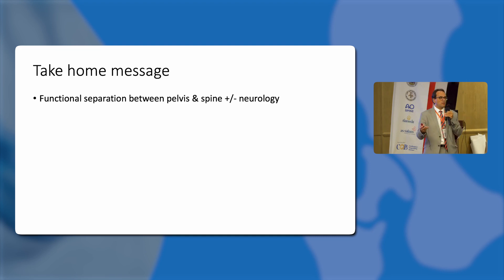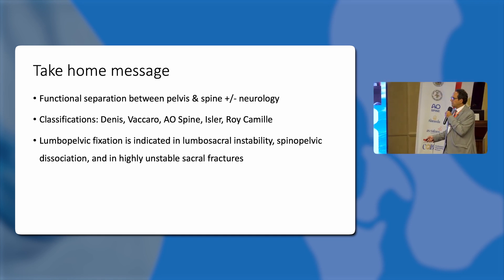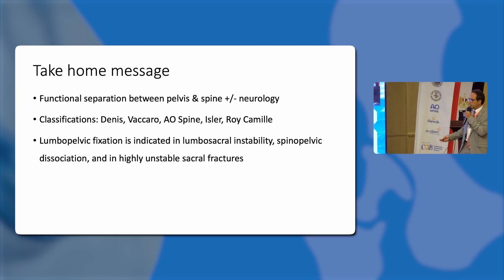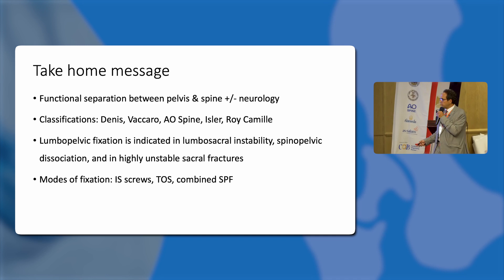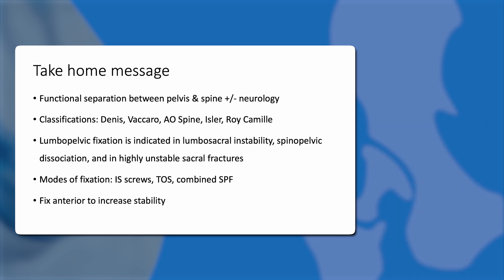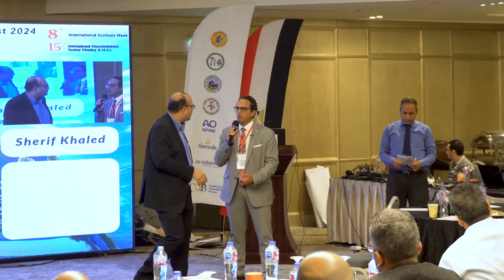The take-home message: spinopelvic dissociation is a functional separation between the pelvis and the spine with a high incidence of neurological injury. Classifications include Dennis, Vaccaro, Isler, Roy-Camille, and the AO system. Lumbopelvic fixation is indicated in lumbosacral instability, spinopelvic dissociation, and highly unstable bilateral sacral fractures. Modes of fixation include ileosacral screws, triangular osteosynthesis, or combined spinopelvic fixation. Remember to fix anterior to increase stability. However, if there is diastasis of the symphysis pubis and spinopelvic dissociation, go anterior first — reduce the symphysis pubis, put two plates, then go posterior.